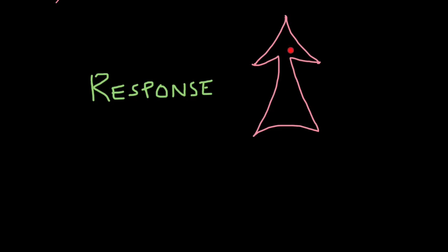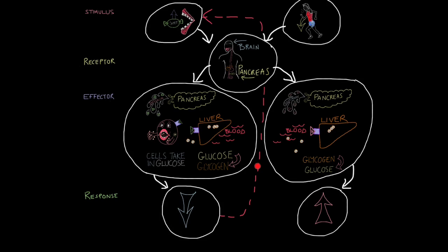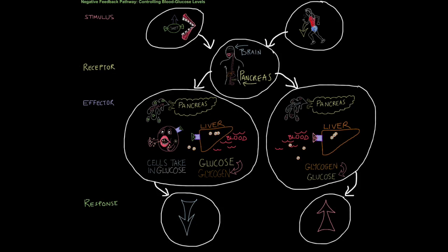The response, of course, is our blood glucose levels rise. So let's piece this all together. Stimulus: blood glucose level rises. Receptor: the pancreas detects the rise in blood glucose levels. Effector: the pancreas secretes insulin. Insulin has two effects. One, insulin binds to cells, allowing them to uptake glucose for respiration. Two, insulin binds to liver cells, allowing glucose to enter the liver where it is converted into glycogen. This results in the blood glucose levels falling, and that achieves negative feedback. In other words, that change has been reversed.